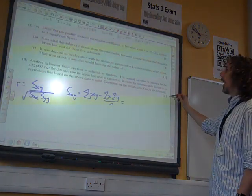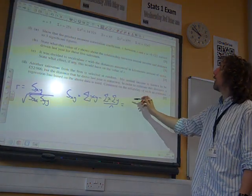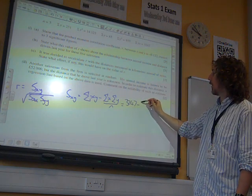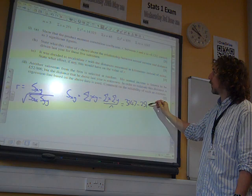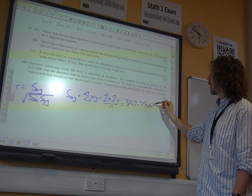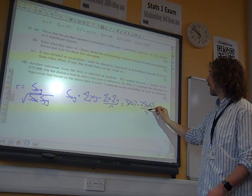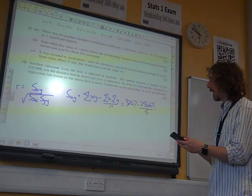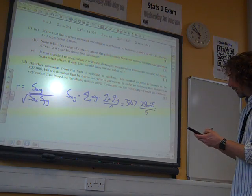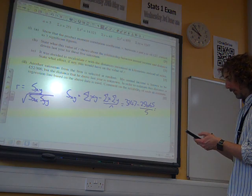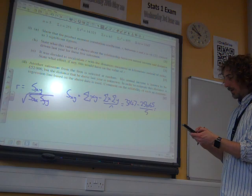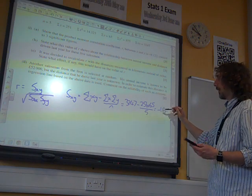Which gives us 3247 minus 251 times 65 over N, which is 5. Which gives us a number... Oh, I hate this calculator. I hate is a strong word, I don't need it. Minus 16. Minus 16. Thanks, Richard.